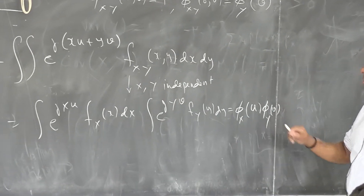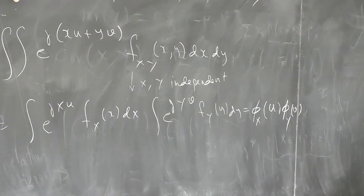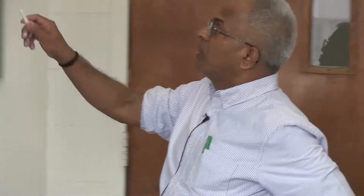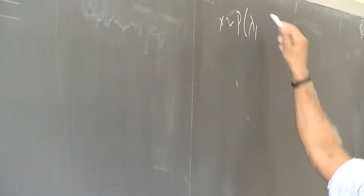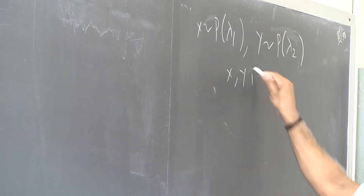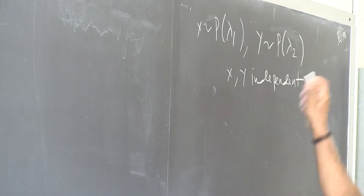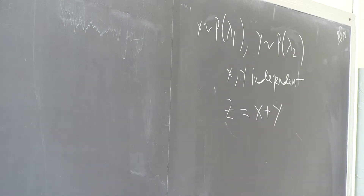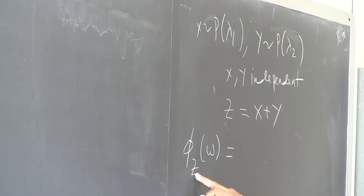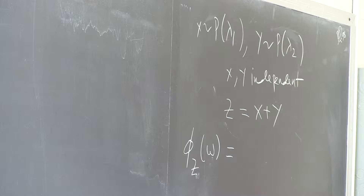Sometimes it is easy to use the characteristic function to compute the density function. Let me show you an example. Suppose X is Poisson with parameter λ₁, Y is Poisson with parameter λ₂, and X and Y are independent. We define Z to be X plus Y. The question is: what is the distribution of Z? Let me show this using the characteristic function — if the resulting characteristic function looks familiar, we can immediately conclude the answer.